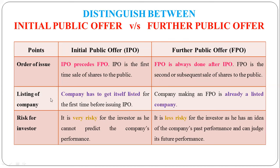Listing of company: At the time of IPO, the company is unlisted — it needs to get listed. The company is not yet on any stock exchange. At the time of FPO, the company is already listed on the stock exchange, because it had already listed during the IPO process.